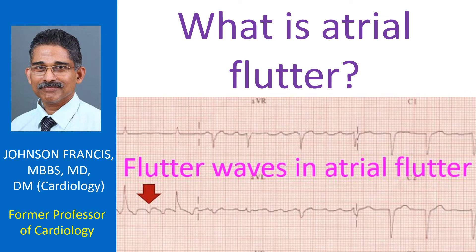Atrial flutter is a fast but organized arrhythmia originating from the upper chambers of the heart. In this way, it is different from the commoner atrial fibrillation, which is quite fast but an irregular rhythm originating from the upper chambers of the heart. It shares the risk of clot formation in the upper chambers and needs additional medications to prevent clot formation, like atrial fibrillation.